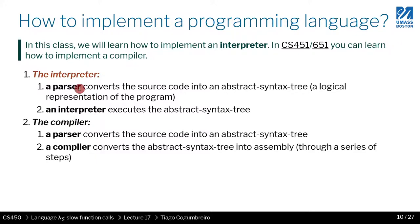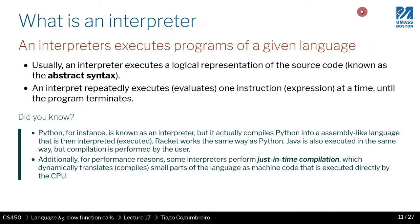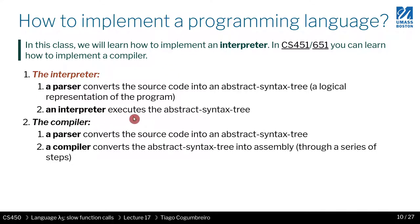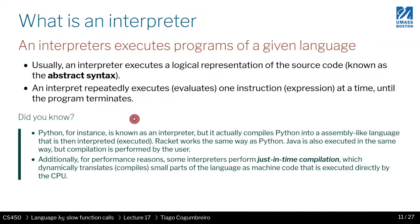For either interpreters or compilers, you need a parser. A parser takes the source code — a text file — and generates a structured representation of that source code, also known as the abstract syntax tree. Then with the AST, you either interpret it or compile it. This course is focused on interpreters; compilers are taught in CS451. Although you will learn how to write a small compiler here, it's not a real compiler in all of its glory.